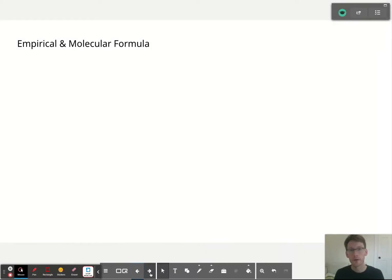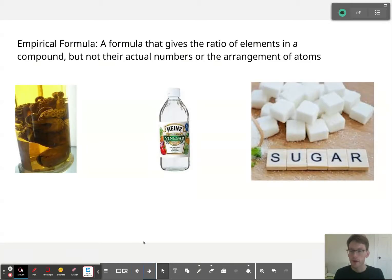In this video we're going to learn how to determine empirical and molecular formulas. First off we need to define what an empirical formula is. It's a formula that tells you the ratio of elements in a compound but doesn't necessarily tell you exactly how many of each atom there is. It also doesn't tell you anything about the spatial arrangement or the structure of the compound.